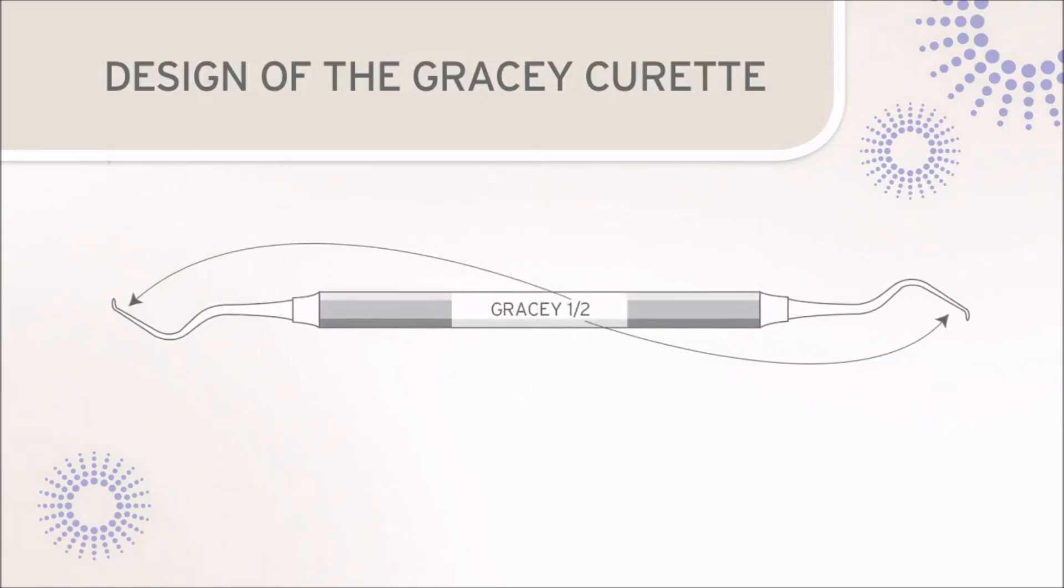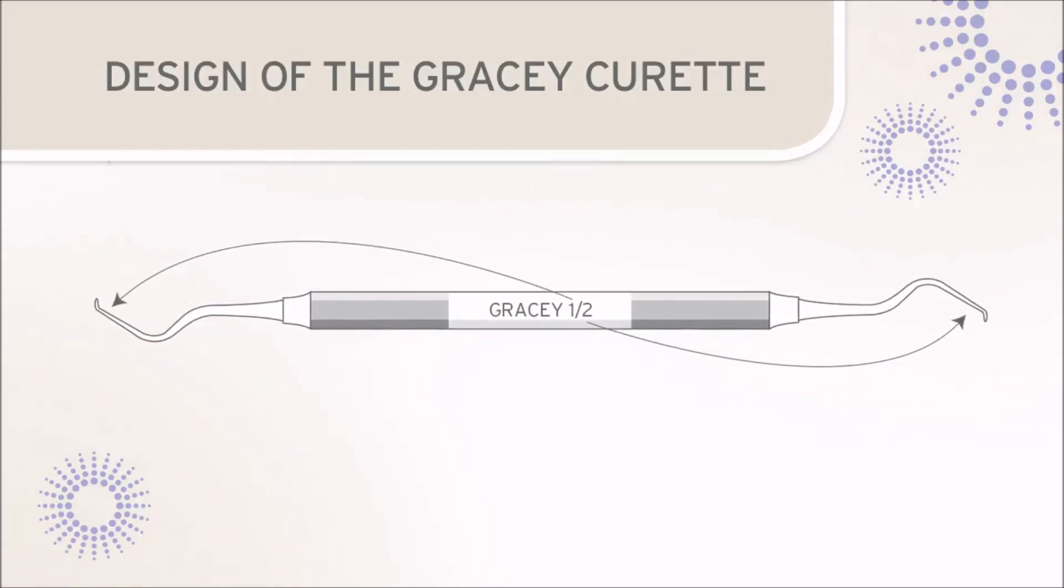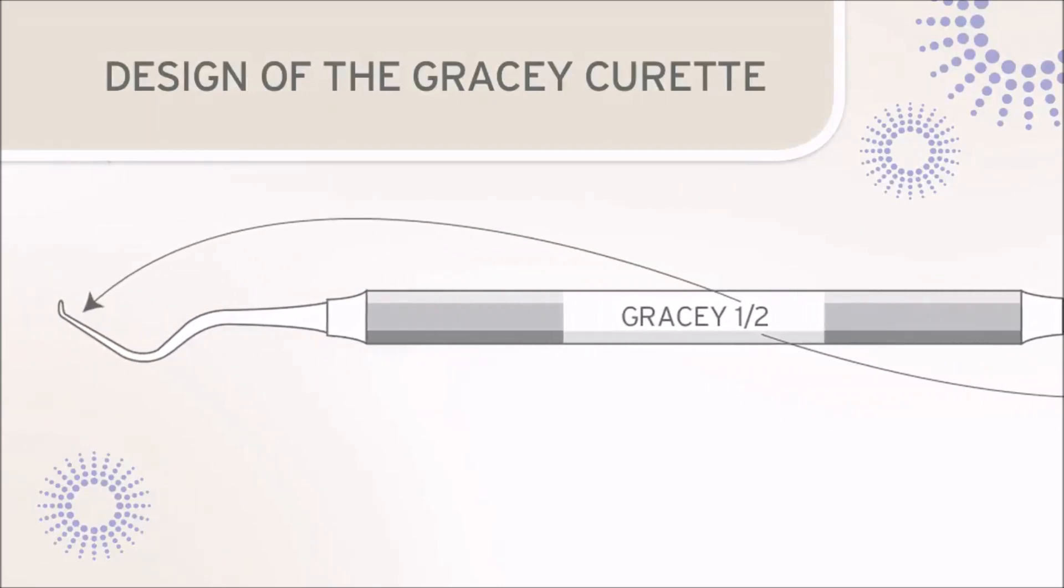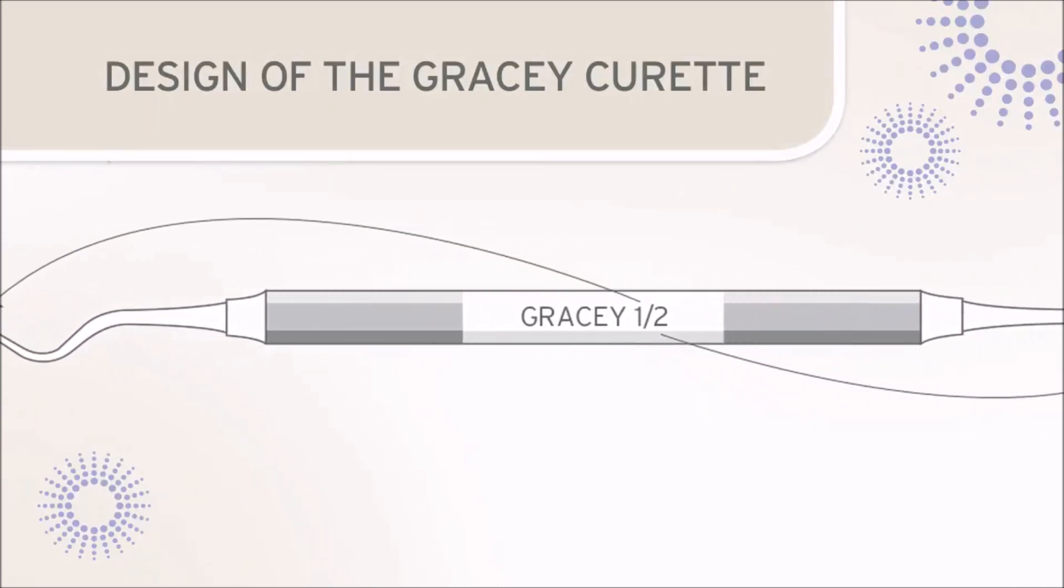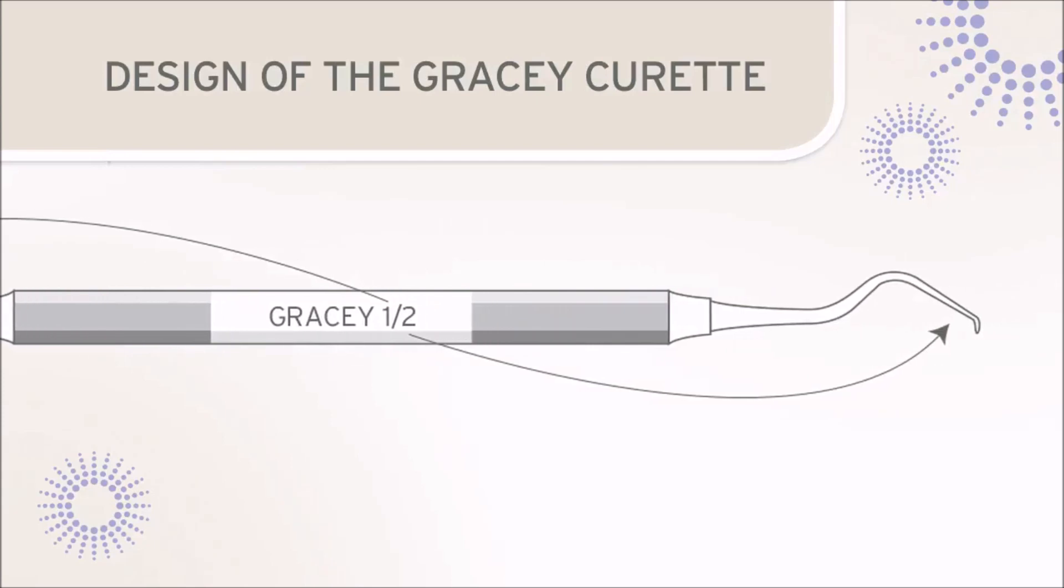Gracey instruments are paired designs with each blade identified by a number. Each double-ended Gracey has an odd and an even numbered blade. For example, a Gracey 1-2 has the number 1 blade on one end and the number 2 blade on the other end.